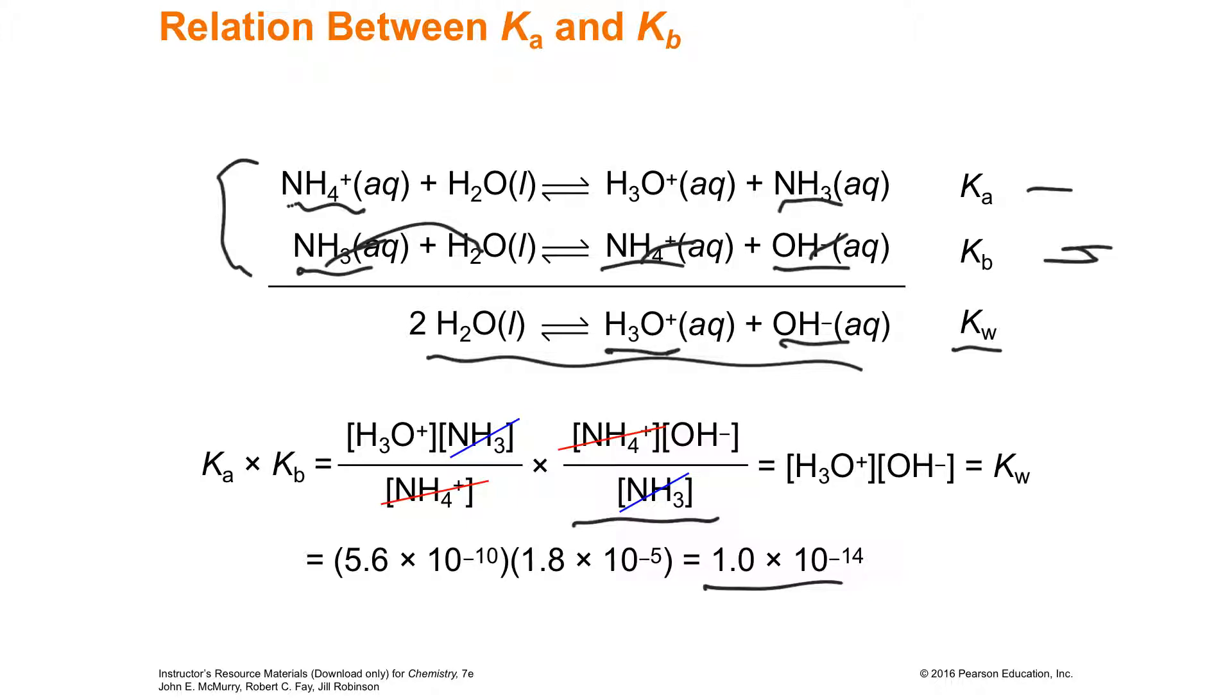That means if you've got one, you can get the other. What if you have acid and you want base? You take 1 times 10 to the negative 14, divide by K sub A, and you've got base.